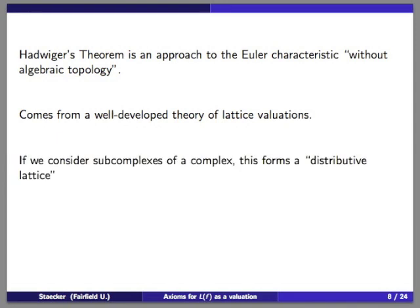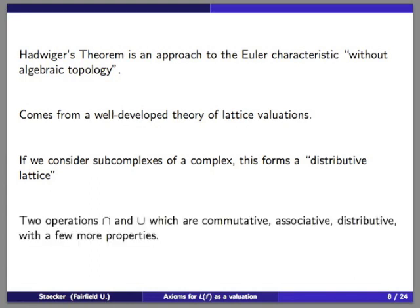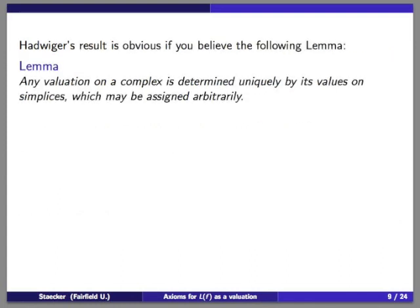Why is Hadwiger's theorem true? It follows from a lemma: any valuation on a complex is determined uniquely by its values on its simplices, and those values may be specified arbitrarily. If you specify a valuation to have value one on every simplex, it is automatically unique. The idea is that you specify the values on all the simplices and show there is a unique extension to all subcomplexes — you build up subcomplexes using the valuation property through unions and intersections of simplices.